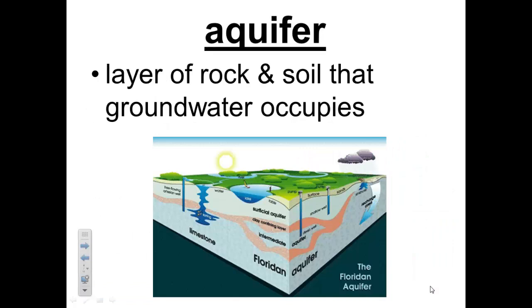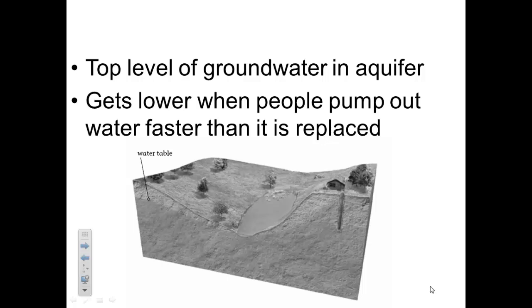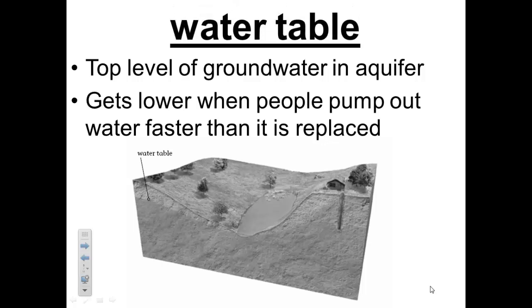The layer of rock and soil that holds the groundwater is called an aquifer. You can see the diagram of where the aquifer is located. The top level of groundwater in an aquifer is the water table, as you saw in the previous diagram.